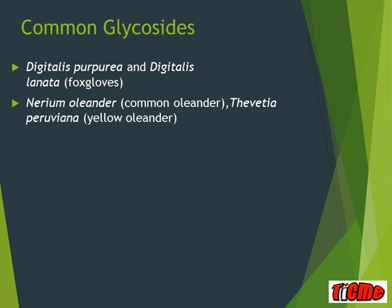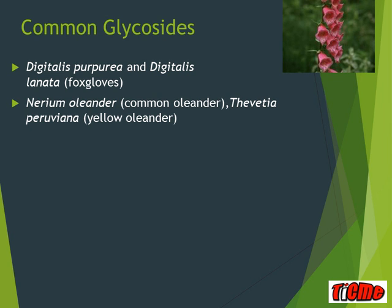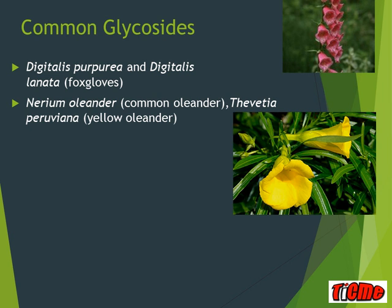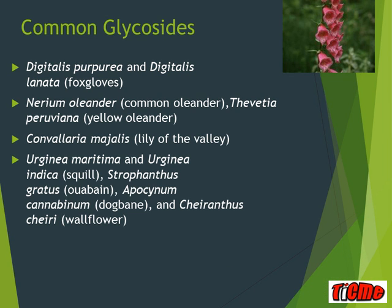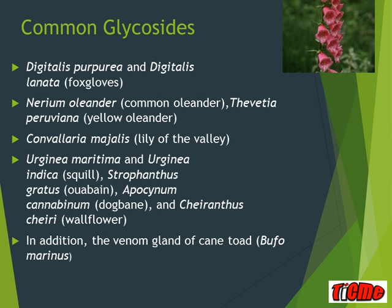The common glycosides include digoxin, foxglove, and oleander — the latter two being the most common plant sources worldwide and unfortunately used in suicide attempts. Other naturally occurring glycosides include lily of the valley, squill, eubane, and wallflower. Additionally, the venom gland of the cane toad, found throughout northern Australia, is said to have digitalis-like effects.